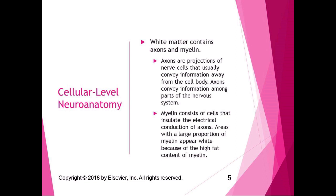Myelin consists of cells that insulate the electrical conduction of axons, and we will talk about those individually in the cellular chapter. Areas with large proportions of myelin appear white in imaging and when physically looking at a brain, because of the high fat content of myelin. So the answer to why white matter is white: white matter has myelin in it with a high fat content, insulating those axons, and gray matter is the cell bodies.